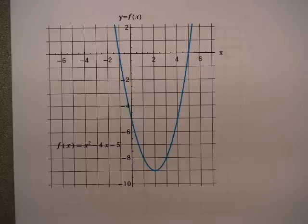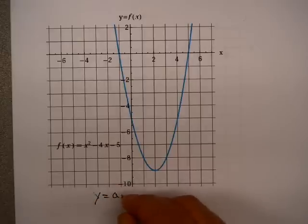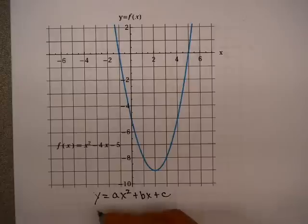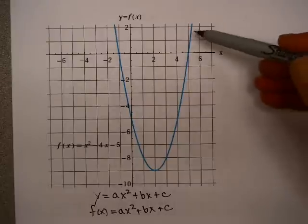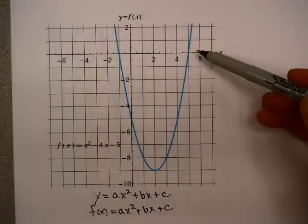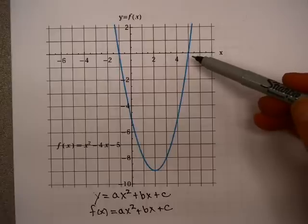First of all is this type of problem where you are given the graph of a quadratic equation. Now remember, quadratic equations have the form y equals ax squared plus bx plus c. And in this section, this is written in function notation as f of x equals ax squared plus bx plus c. Now you are given a graph of the quadratic equation, and the shape of the graph of a quadratic equation is called a parabola.